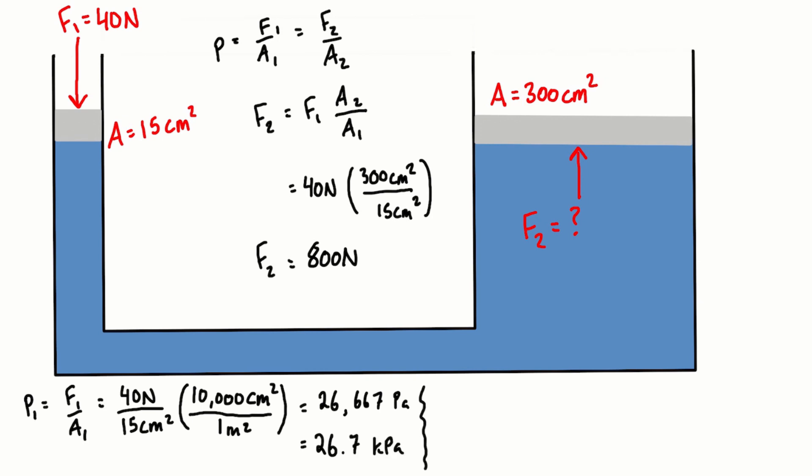And when we go and check the pressure at the other side at the other piston we'll call that P2. So we have 800 newtons over 300 centimeters squared and again we multiply by unity and we're going to get the exact same number here.